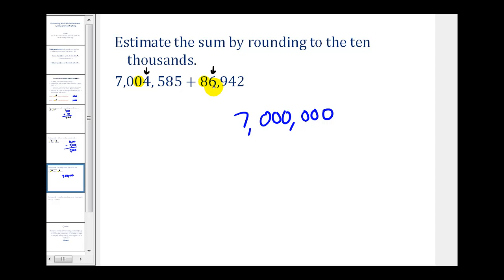The six tells us to round up. So this would round to 90,000. Notice most of these columns are zeros. Here we have a nine, a zero, and a seven. So the estimation for this sum when rounding to the ten thousands is 7,090,000.